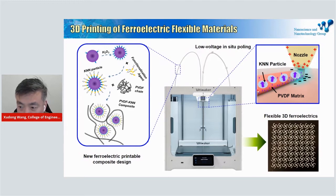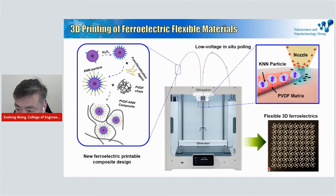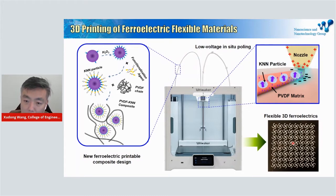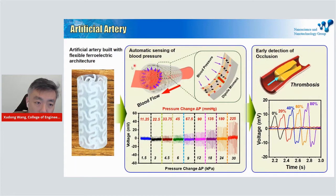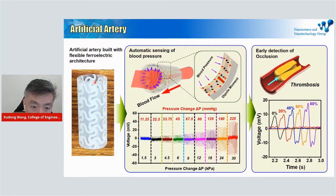With our new materials and technology, we are able to create a new three-dimensional artifact structure with high flexibility and built-in ferroelectricity. This means the material is able to produce electric polarization or electric field based on small motions or small pressure changes. With our material, we built a flexible artificial artery that is as flexible as real ones.